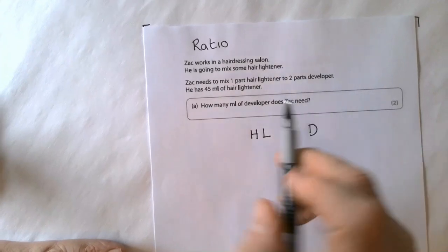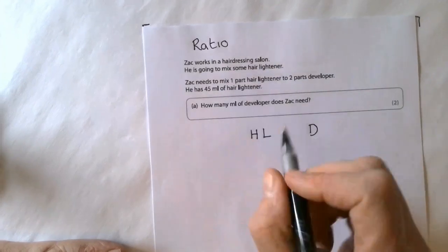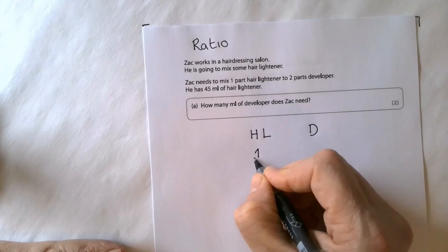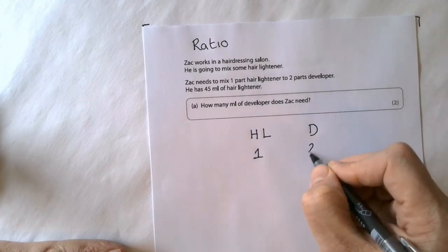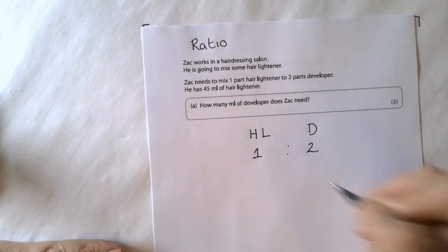It states that the ratio is one part hair lightener to two parts developer. So that becomes your ratio.